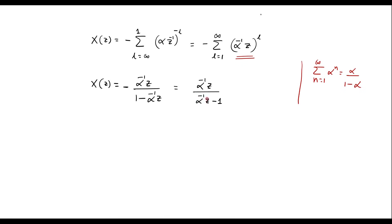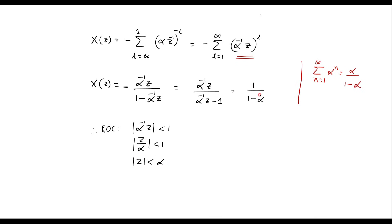Now in this expression, if alpha inverse z is equal to 1, then X of Z will become infinity. So alpha inverse z must be less than 1. Therefore ROC is: alpha inverse z must be less than 1, or z divided by alpha must be less than 1, or z must be less than alpha. Further, I can represent this signal as 1 upon 1 minus alpha Z inverse. For the ROC, if this is the radius alpha, then the ROC exists inside the circle.